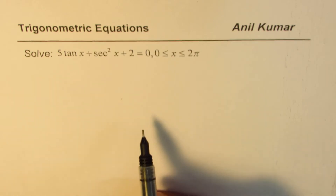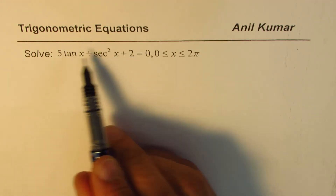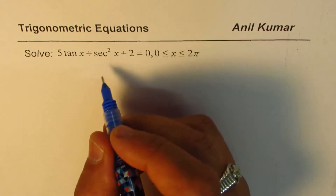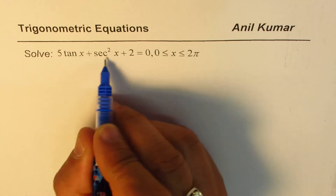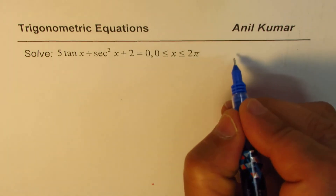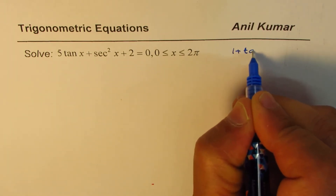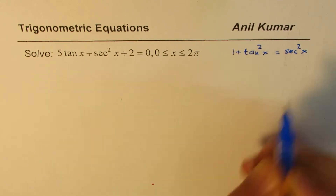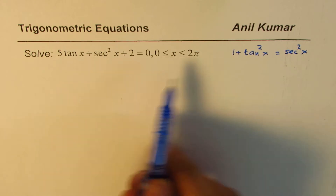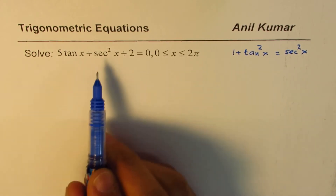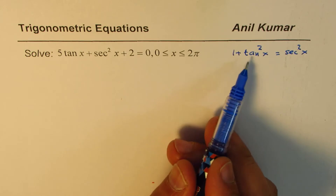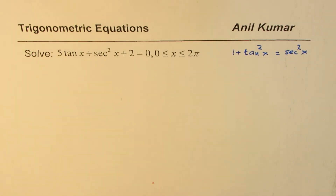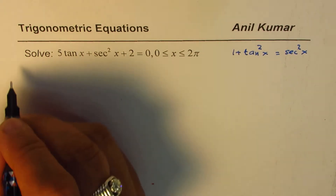Whenever you have such a situation, you should think about Pythagorean trigonometric identities. We have 1 + tan²(x) = sec²(x), so you can replace sec²(x) by 1 + tan²(x), thereby getting a quadratic equation in just tan(x). That should help you solve this question — pause the video, try it, then look at my suggestions.